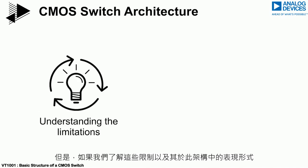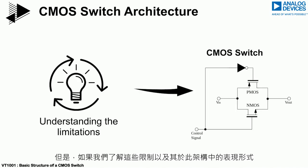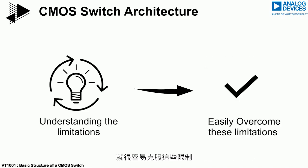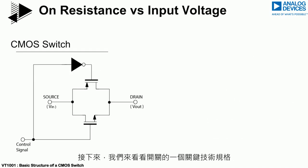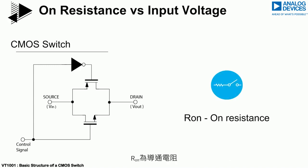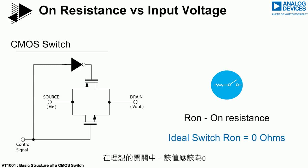However, if we understand the limitations and how they apply to this architecture, they can be easily overcome. We will now take a look at a key specification of switches — the on resistance. In an ideal switch, this should be zero.